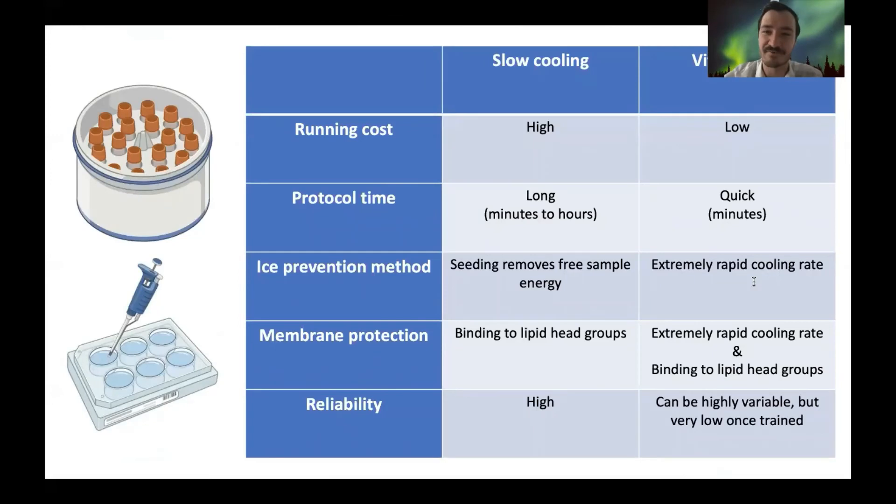A quick rundown of what we just spoke about. Slow cooling is generally more expensive and takes longer time-wise than vitrification does. Slow cooling prevents ice formation through that process called seeding, where it induces ice to form outside of the cell instead of inside. Whereas vitrification removes almost all of the water within the cell and freezes so rapidly that there's no time for the ice to form in the first place. Slow cooling protocols also protect the cell membranes by those sugar groups binding between the lipid head groups and preventing their phase transition, which keeps that membrane very stable. This also happens in vitrification protocols that use large macromolecules like skim milk or egg yolk or sugars.